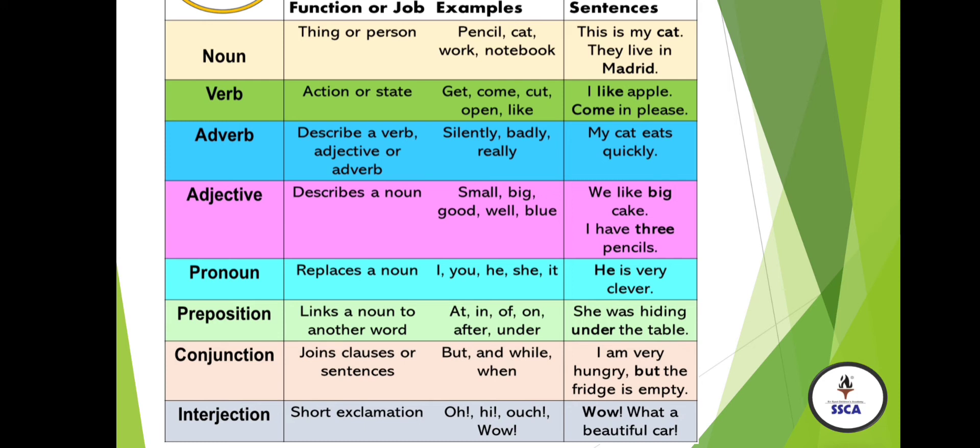Conjunction joins clauses or sentences. Examples: but, and, while, when, etc. Example sentence: 'I am very hungry, but the fridge is empty.' Here you can see two sentences, and 'but' is the connector which is connecting these two sentences and making sense.